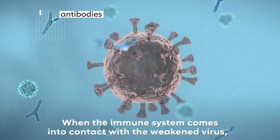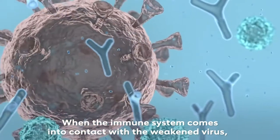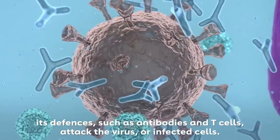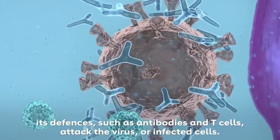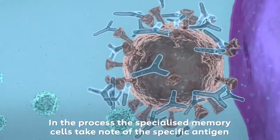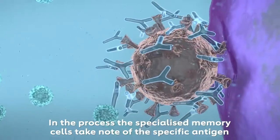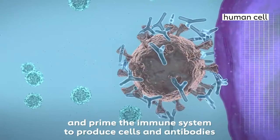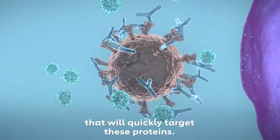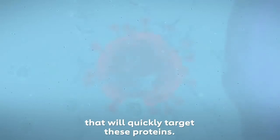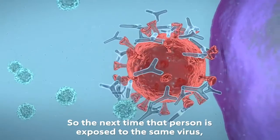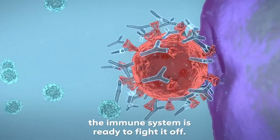When the immune system comes into contact with the weakened virus, its defences, such as antibodies and T cells, attack the virus or infected cells. In the process, specialised memory cells take note of the specific antigen and prime the immune system to produce cells and antibodies that will quickly target these proteins. So the next time that person is exposed to the same virus, the immune system is ready to fight it off.